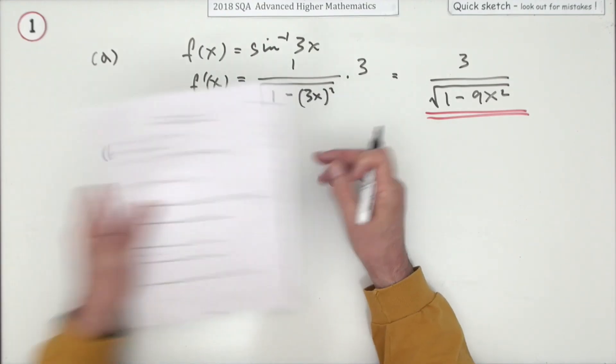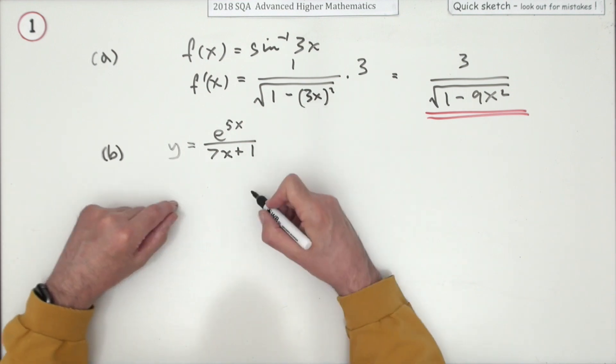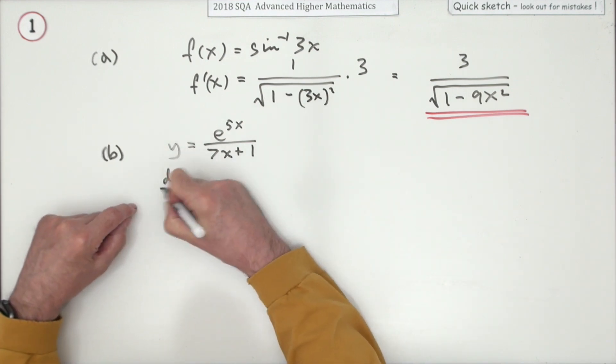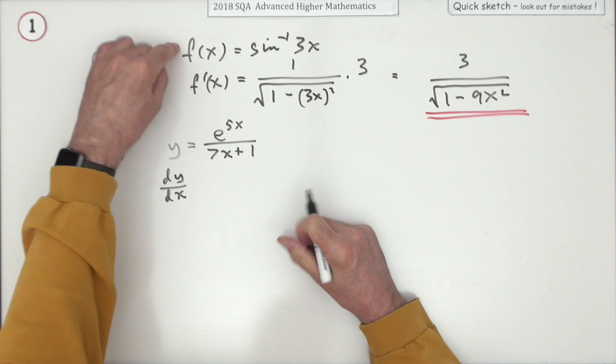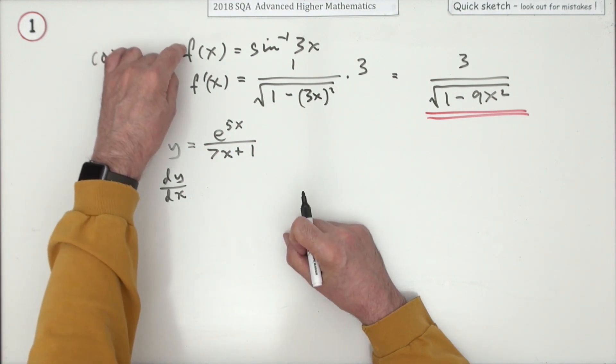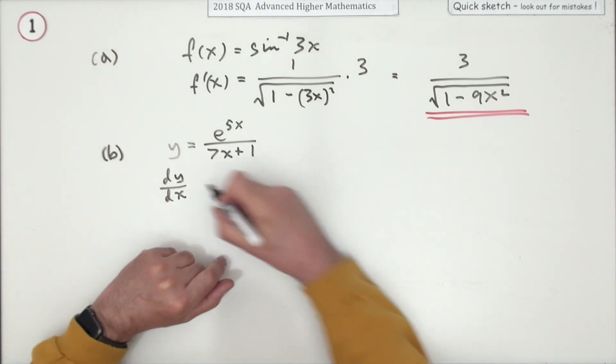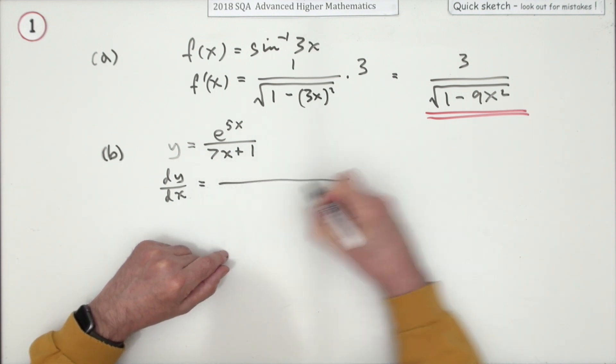Now for part B, again for two marks, differentiate this. So if you're going to be using the quotient rule, notice they're using different terms. So f(x), presumably they're f', y, there'll be dy/dx. Quotient rule.